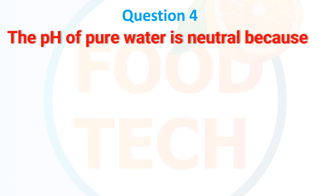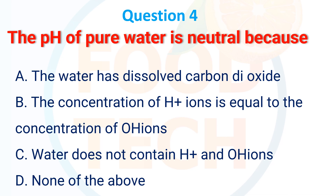The pH of pure water is neutral because: A. The water has dissolved carbon dioxide, B. The concentration of H+ ions is equal to the concentration of OH- ions, C. Water does not contain H+ and OH- ions, D. None of the above. The correct answer is B: the concentration of H+ ions is equal to the concentration of OH- ions.